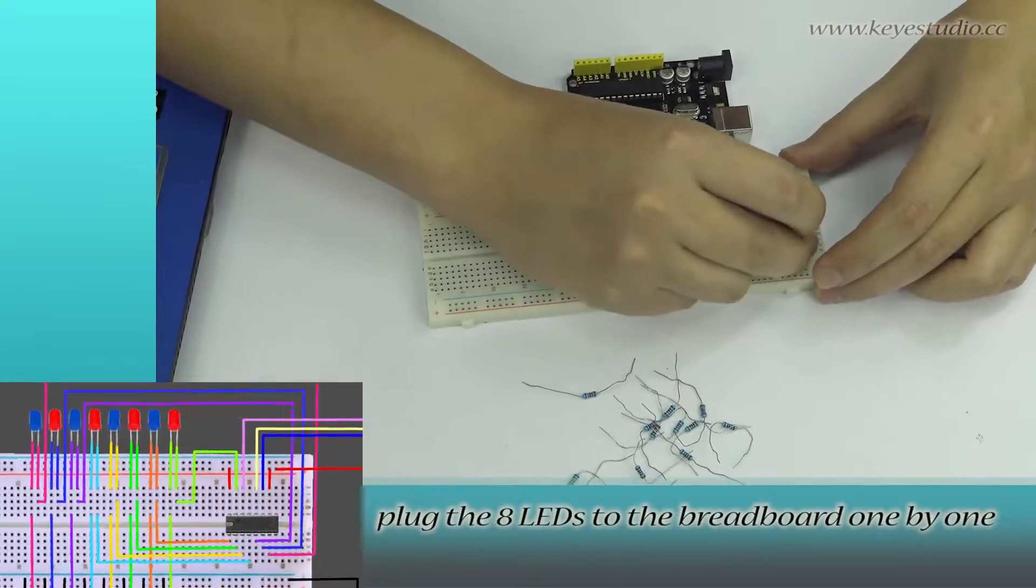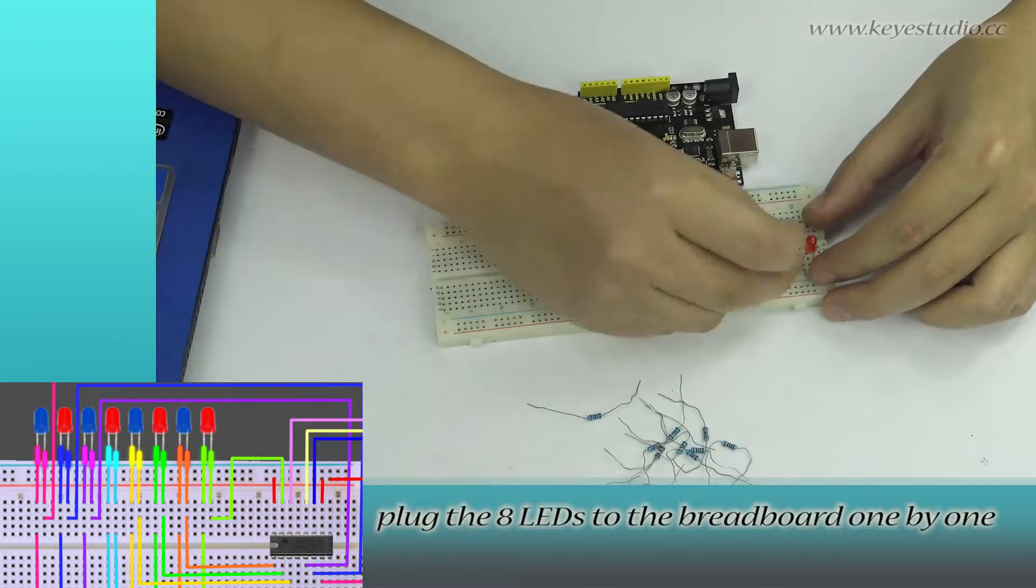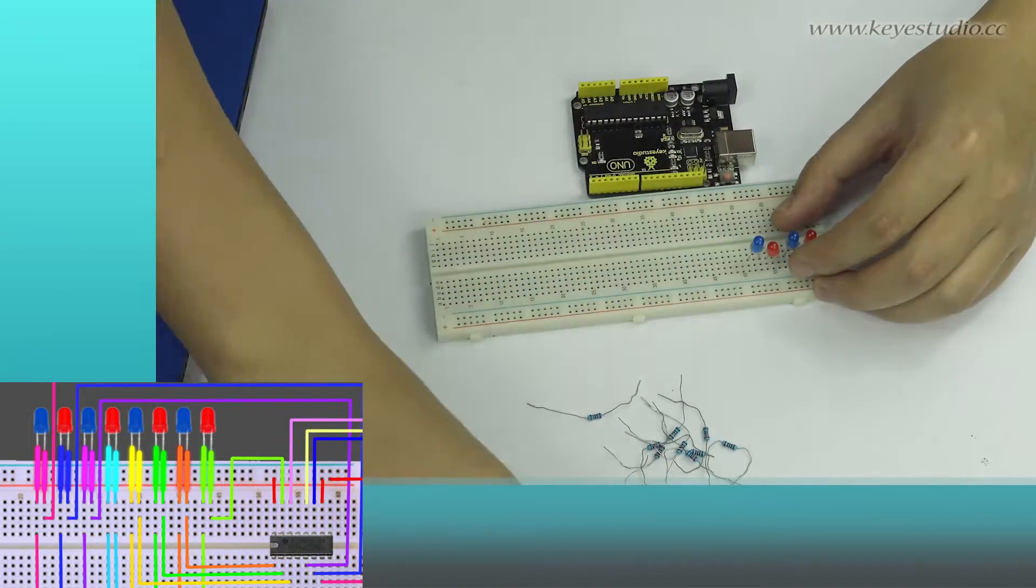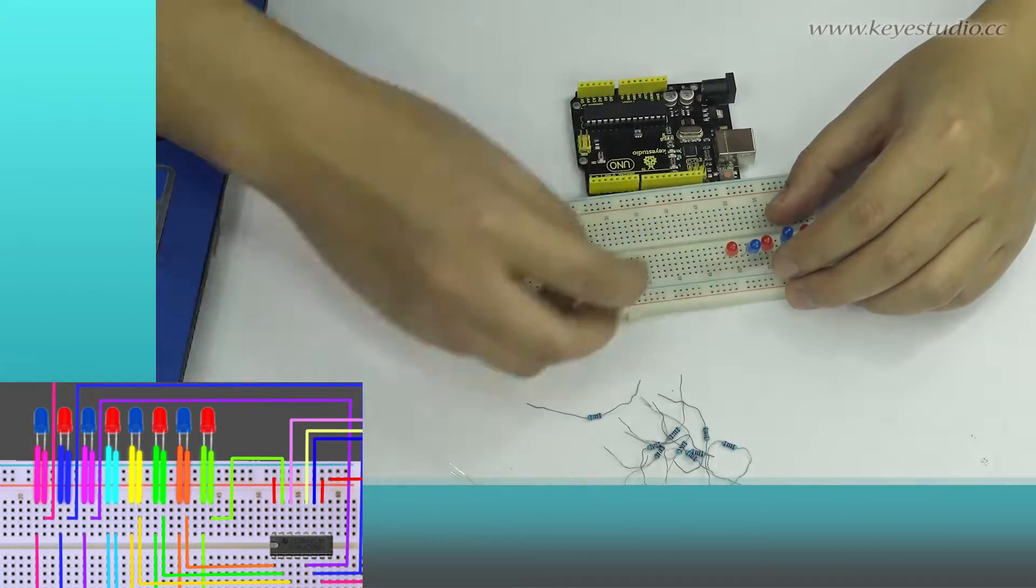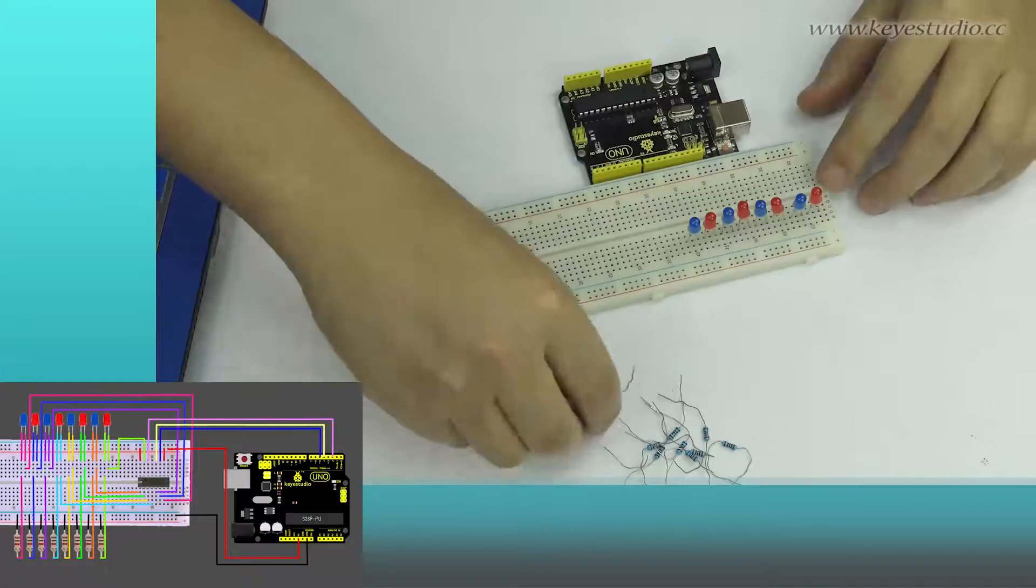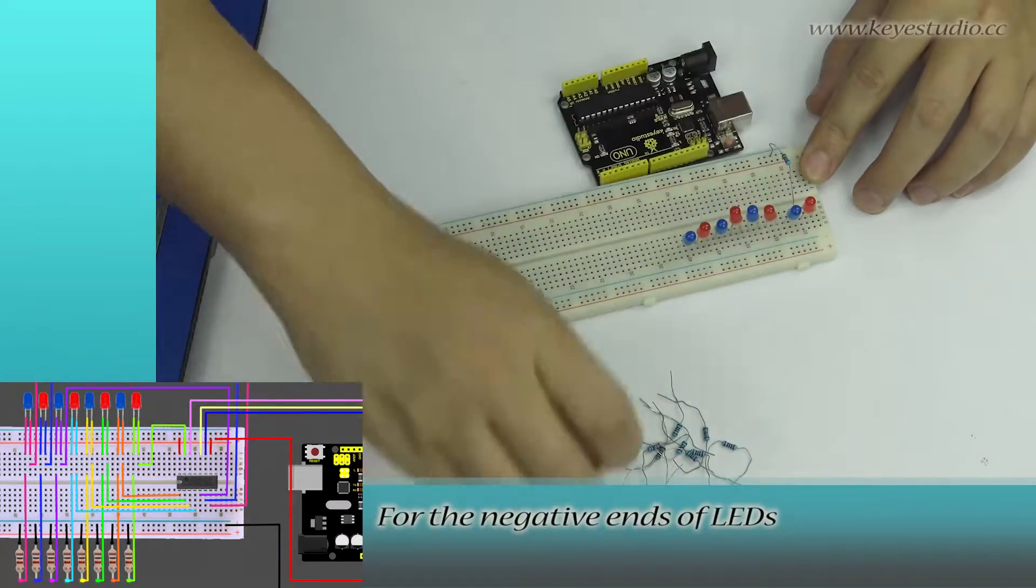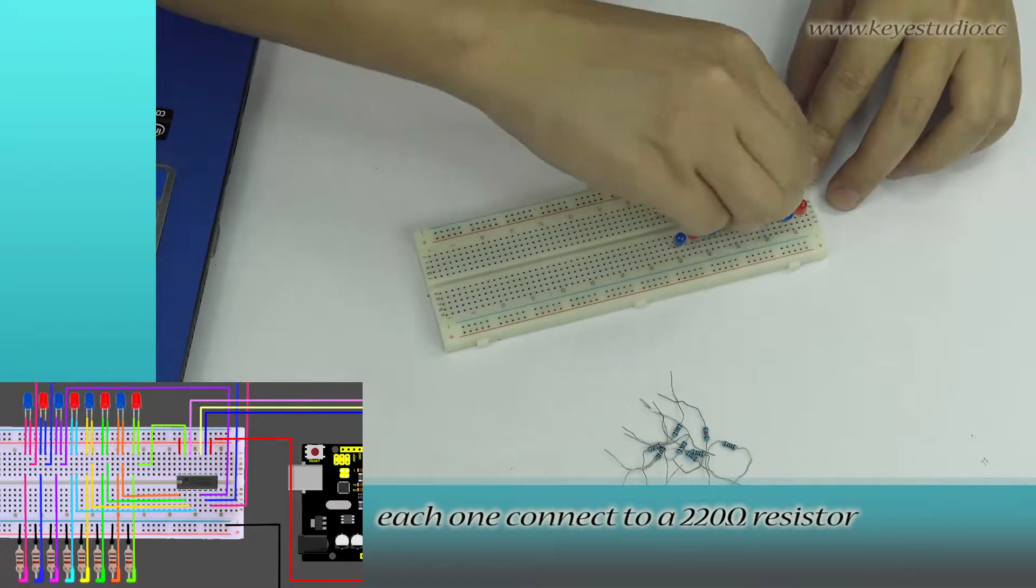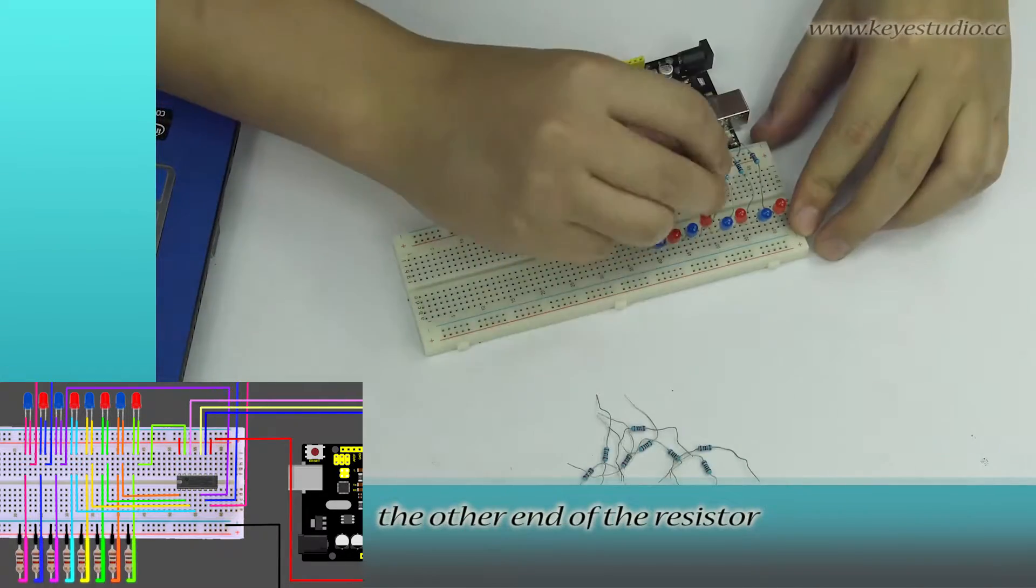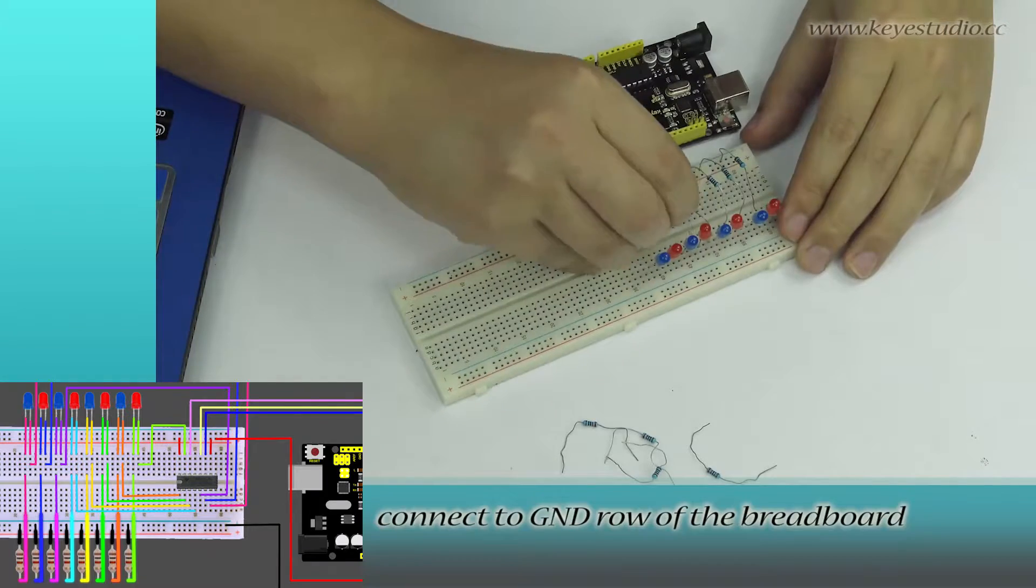Now plug the 8 LEDs to the breadboard one by one. For the negative ends of LEDs, each one connects to a 220 ohm resistor. The other end of the resistor connects to the ground rail of the breadboard.